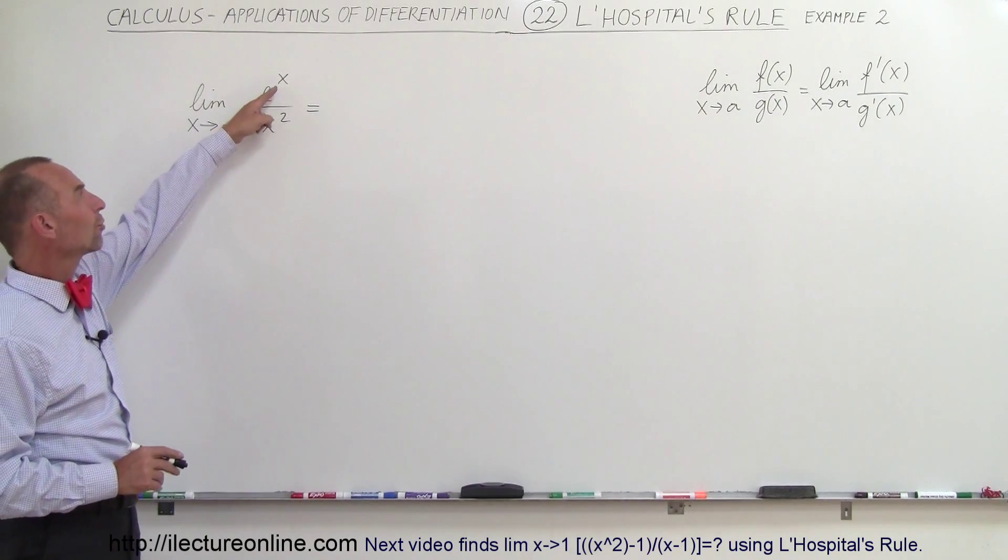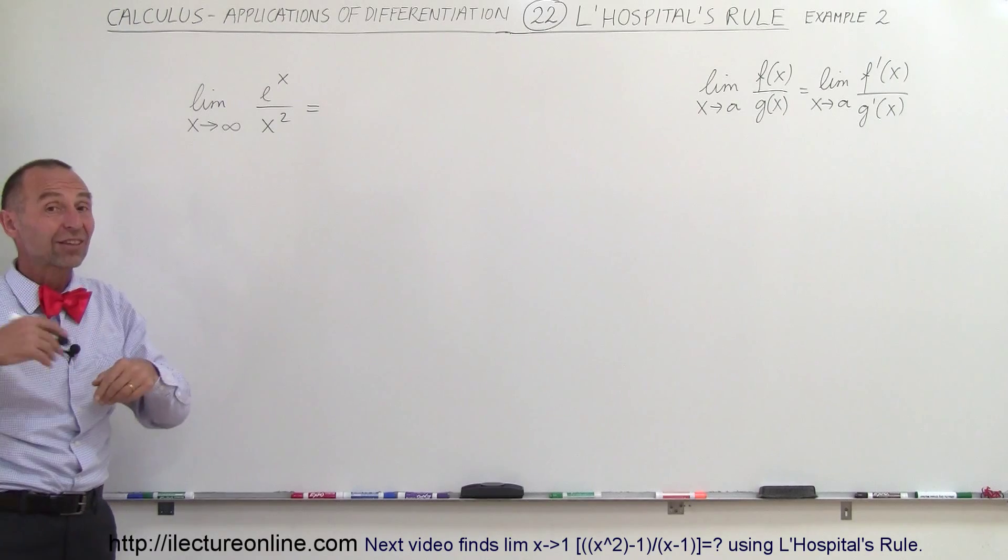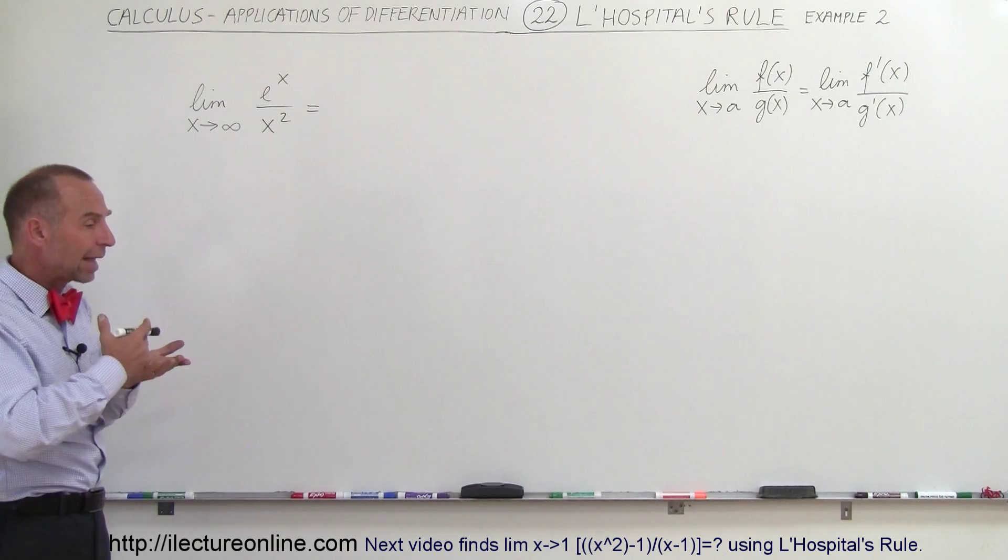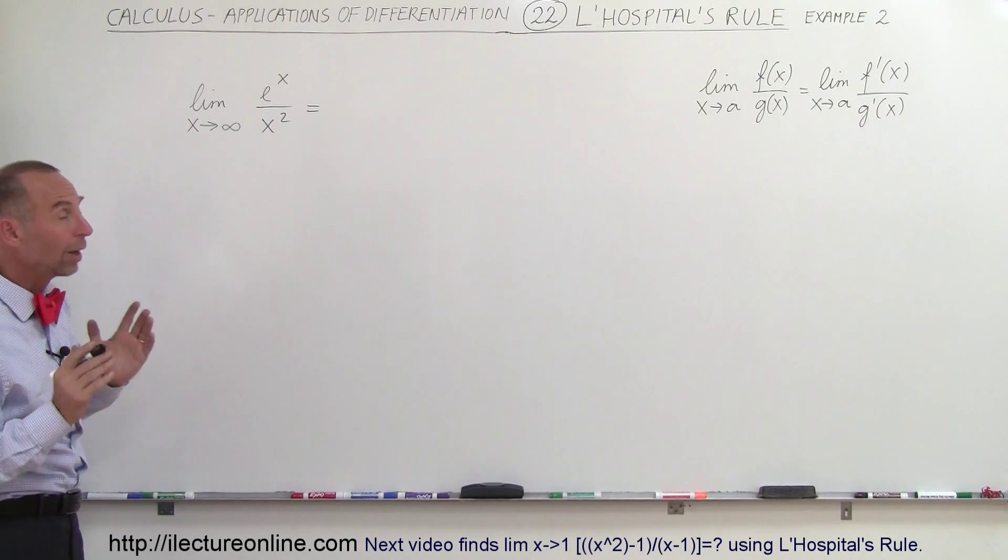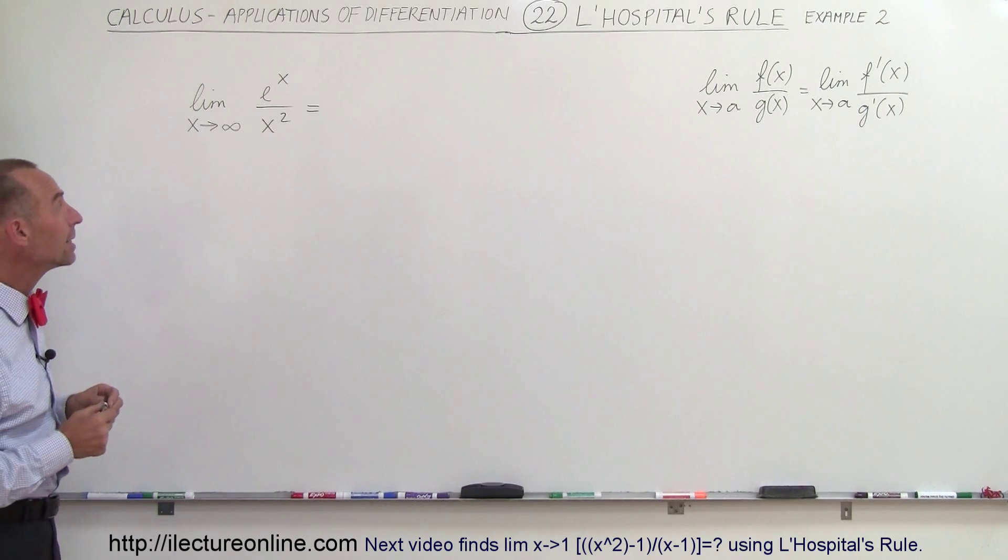Realizing that e to the x grows faster than x squared as x gets big, you can imagine that it should not be infinity divided by infinity, but what is it? Well L'Hôpital's rule can come to the aid here.